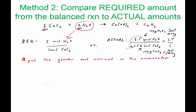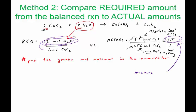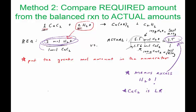So what is this telling you? You have 3.5 to 1 as your actual ratio, but what's required is only 2 to 1. What you actually have is 3.5 to 1. That means there's excess H₂O — that's what that's telling you. And it also means that calcium carbide is going to run out. This method is probably the hardest to explain, but once you get used to it, it's by far the fastest. It's especially useful for aqueous reactions like precipitation reactions.